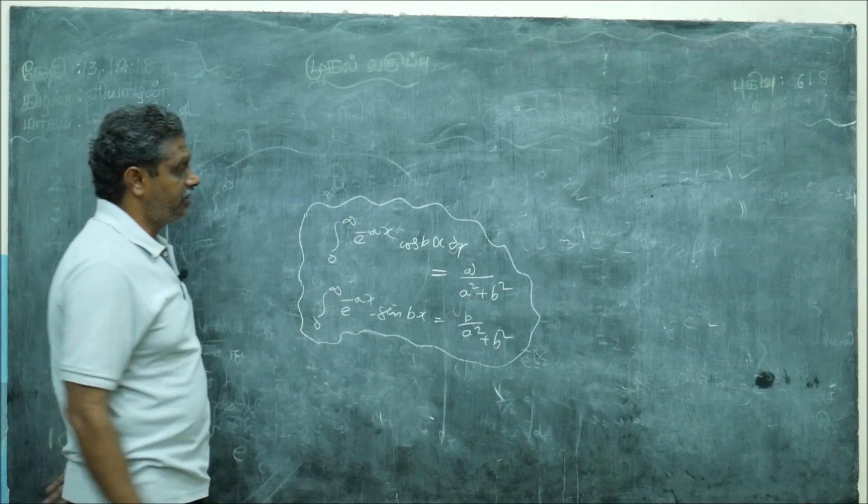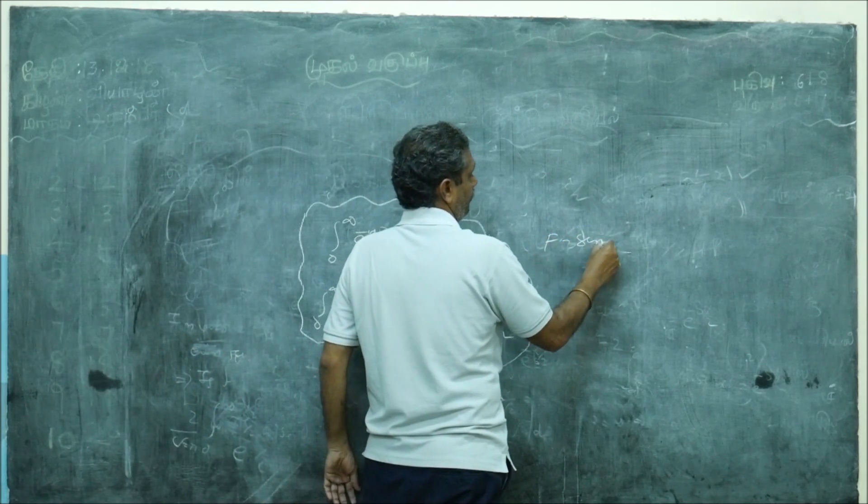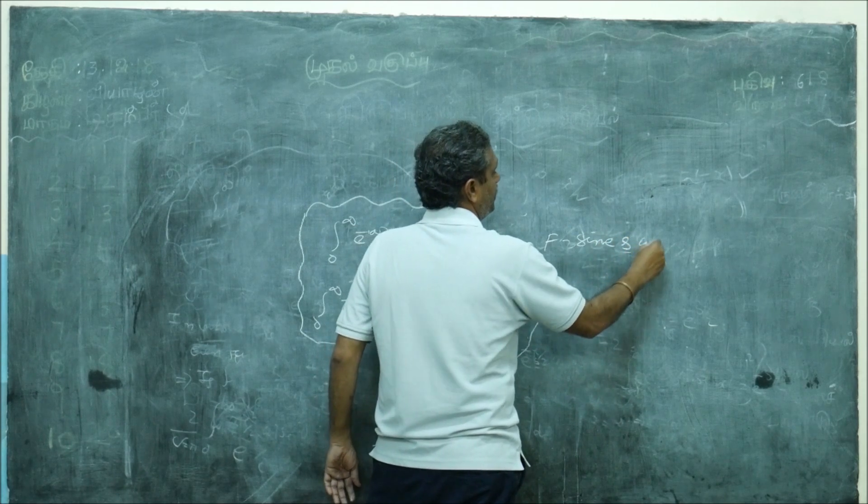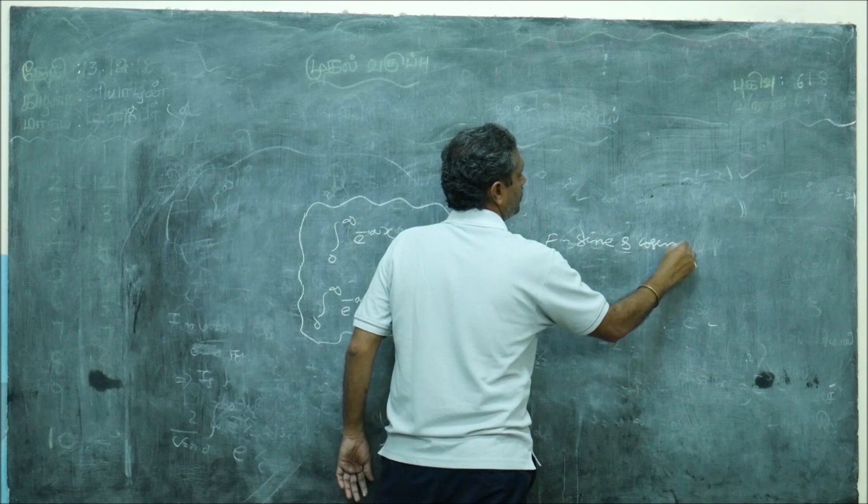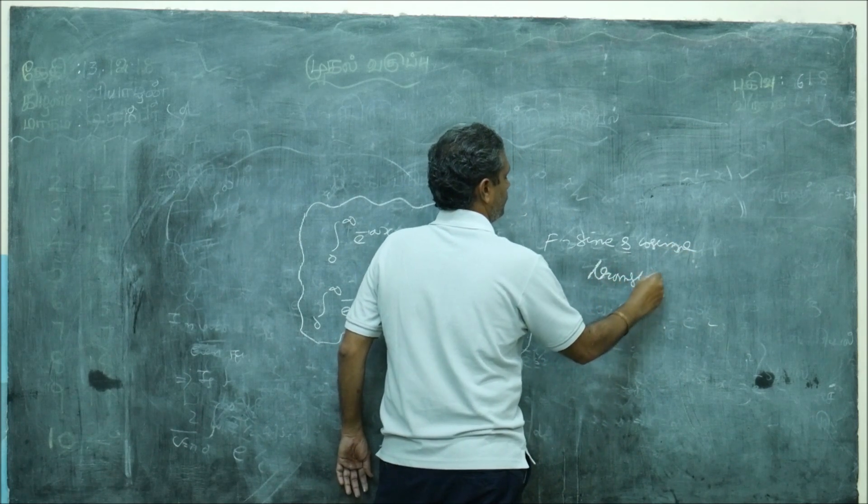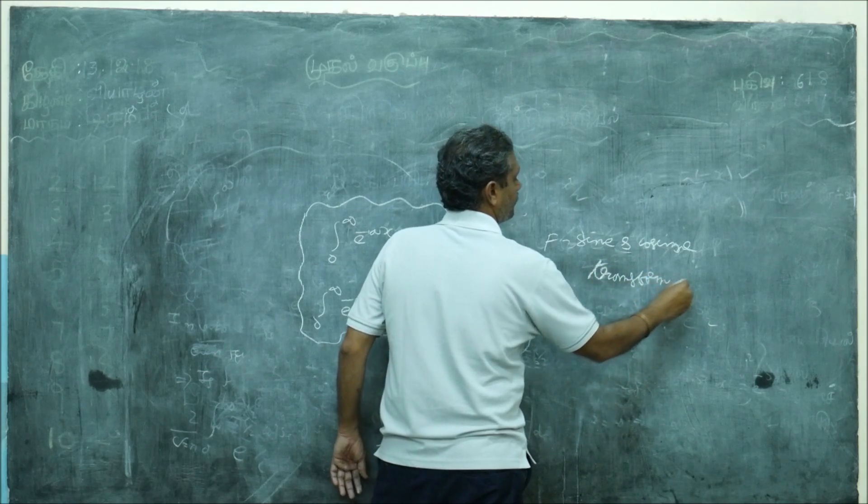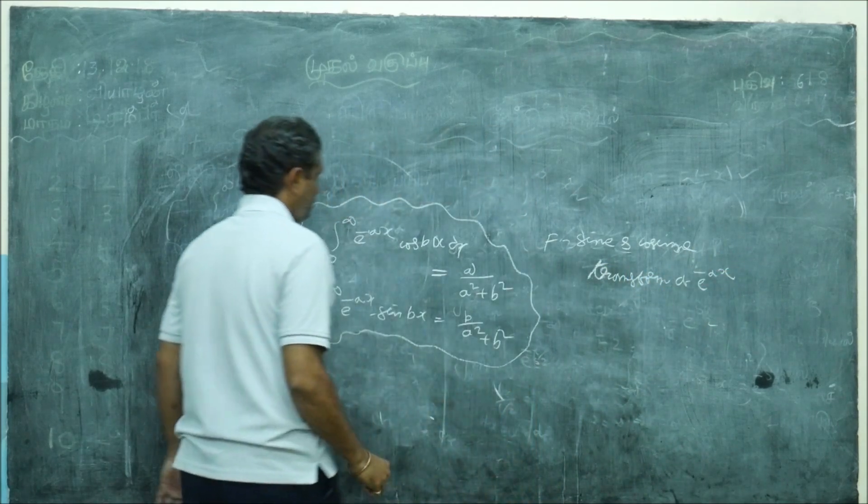Now, my problem is what is the Fourier sine and cosine transform of e power minus a x. So, what is the result actually?